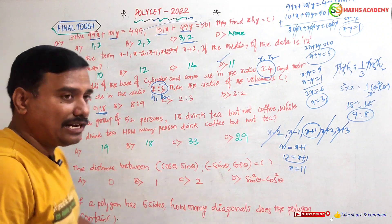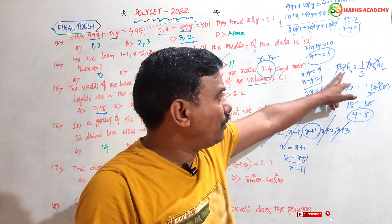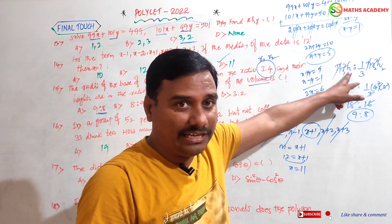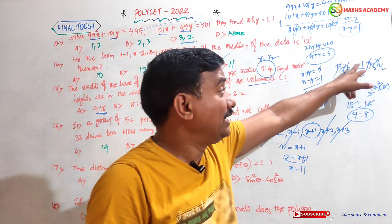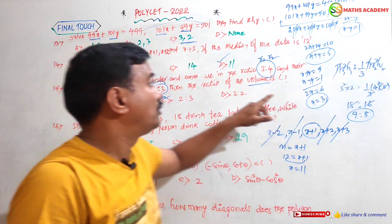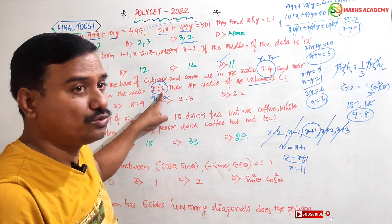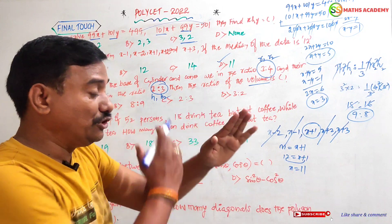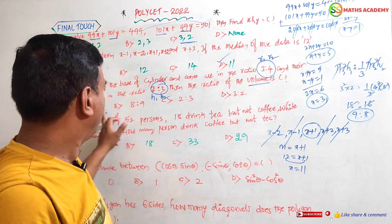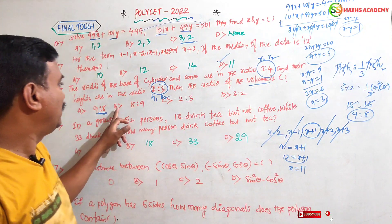Here is a useful technique: radius is squared but height is not. So you can use the cross-multiply method: r1 × h1 versus r2 × h2. That gives 3 × 3 = 9 and 4 × 2 = 8, so the ratio of volumes is 9:8.